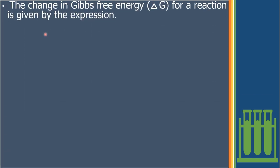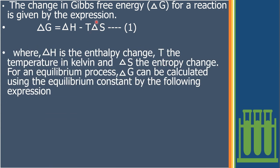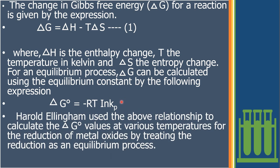The spontaneity of a reaction is calculated with the help of Gibbs free energy. ΔG = ΔH − TΔS. Gibbs free energy depends upon three factors: ΔH (enthalpy change), T (temperature in Kelvin), and ΔS (entropy change). If the reaction is spontaneous, ΔG must be negative. This is also calculated using the equilibrium constant: ΔG° = −RT ln Kp, where Kp is the equilibrium constant with respect to pressure. Harold Ellingham used this relationship for the reduction of metal oxides into metal.